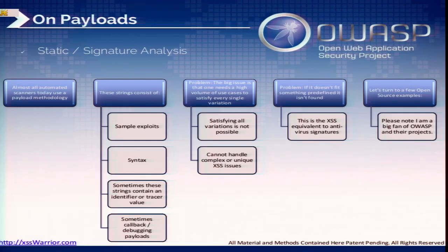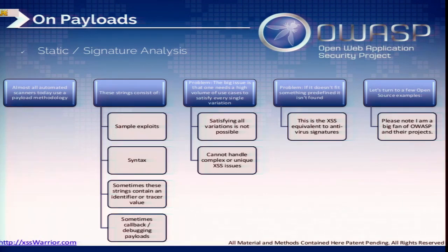This is basically what signature and static analysis is, and the problems with them. The strings consist of sample exploits with fixed syntax. Sometimes these strings contain a unique identifier, a tracer value. Sometimes they have callbacks or debugging to be able to validate. The problem is they can't satisfy a lot of different conditions — basically, if it fits, great; if it doesn't fit, we can't handle it. From my perspective, these are basically like antivirus signatures to a certain extent.